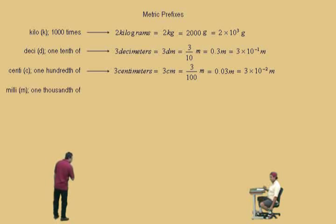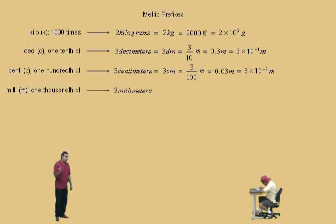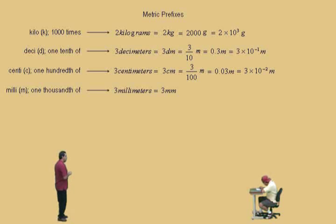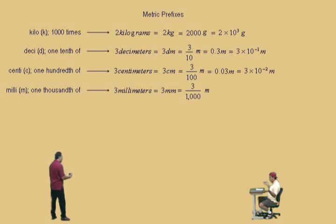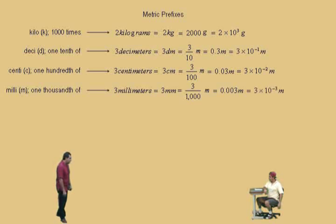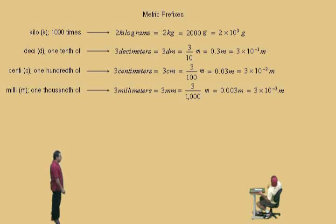Let's talk about milli. Milli, abbreviated with an m, is one-thousandth of. If you have 3 millimeters, abbreviated 3 mm — and I know meters also uses m, but when you see two m's together it's understood to be millimeters — milli means one-thousandth of, so 3 millimeters is three-one-thousandths of a meter. As a decimal, that's 0.003, and in scientific notation, 3 times 10 to the negative 3. So 3 millimeters is 3 times 10 to the negative 3 meters.